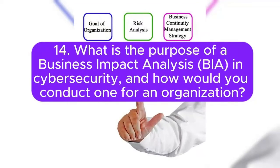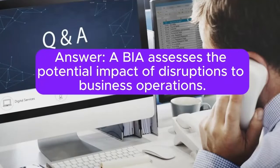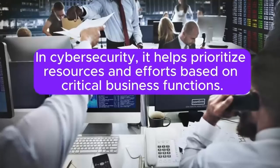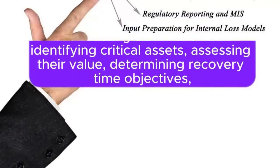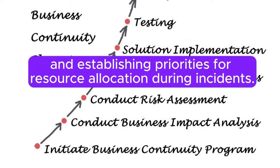Question 14: What is the purpose of a business impact analysis (BIA) in cybersecurity, and how would you conduct one for an organization? Answer: A BIA assesses the potential impact of disruptions to business operations. In cybersecurity, it helps prioritize resources and efforts based on critical business functions. Conducting a BIA involves identifying critical assets, assessing their value, determining recovery time objectives, and establishing priorities for resource allocation during incidents.